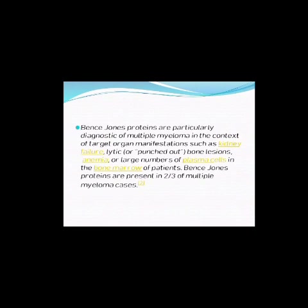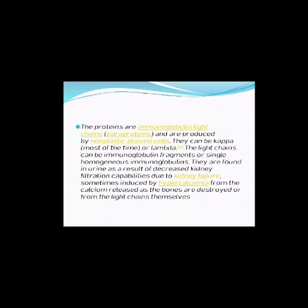Bence Jones proteins are particularly associated with multiple myeloma, but also with kidney failure, lytic bone lesions, anemia, and large amounts of plasma cells in the bone marrow. Two-thirds of multiple myeloma cases show elevated Bence Jones proteins in urine and blood. These proteins are immunoglobulin light chains — paraproteins produced by neoplastic plasma cells — and can be kappa or lambda chains, with kappa chains being most common in urine samples.